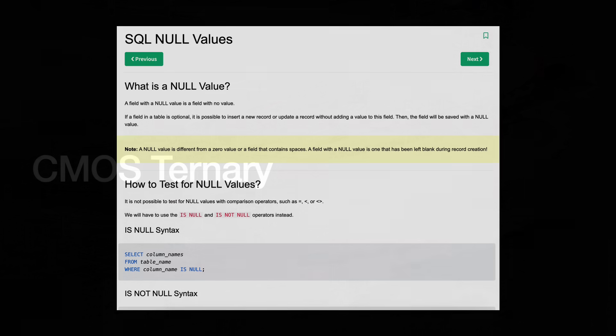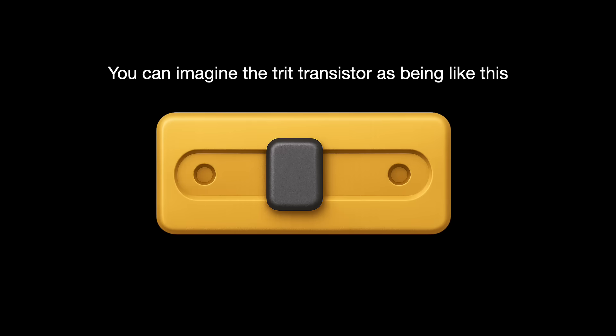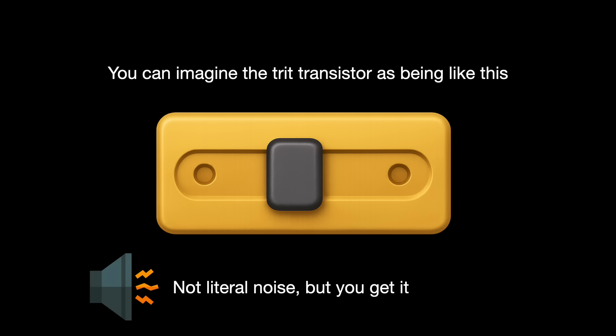Perhaps most famously, the query language SQL features three-state logic with true, false, and null — where null means unknown or no value. Many beginners struggle to grasp it, leading to errors and confusion. But the key missing part of the puzzle has always been the devices. Binary and MOS transistors go together like peanut butter and jelly — just two voltage states, easy to tell between them. A ternary device must reliably distinguish between multiple threshold voltage levels, which is hard. Noise can mess with those levels, and you need tighter control of the inputs, necessitating additional systems and hardware.